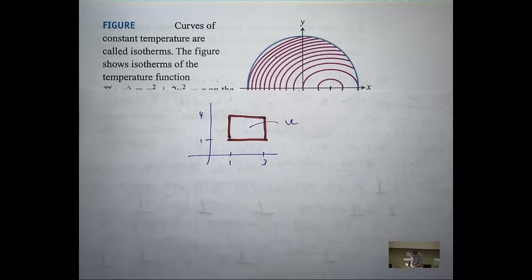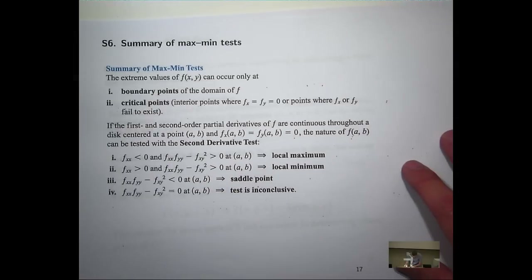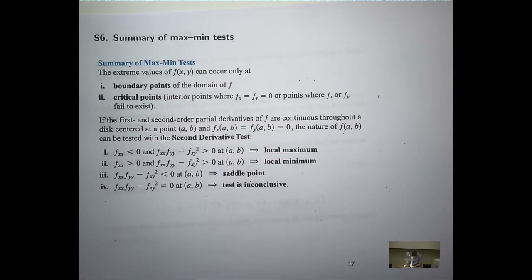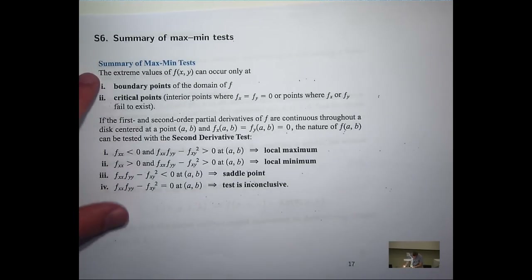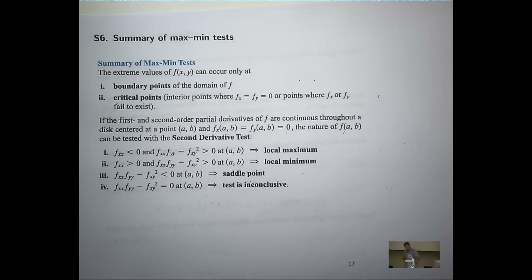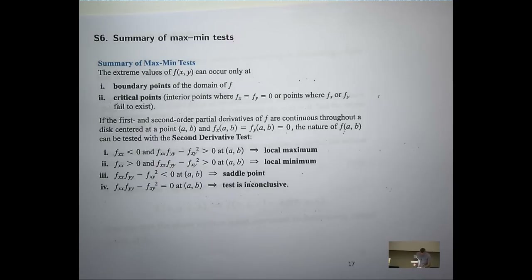This is probably the most important slide of the last two lectures: the summary of the max-min tests. Extreme values of a function of two variables can only occur at either boundary points of the set — points on the edge — or critical points, which are interior points not on the boundary where the first partials are equal to zero.